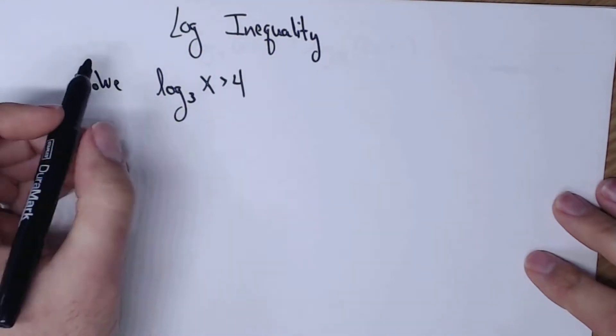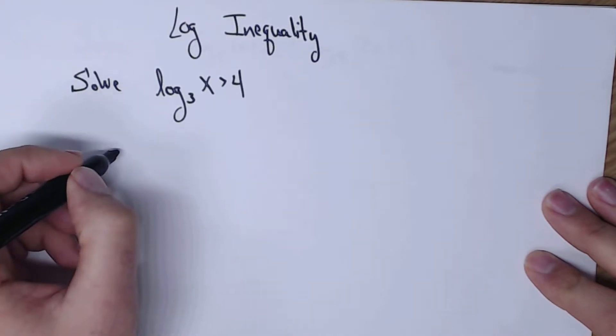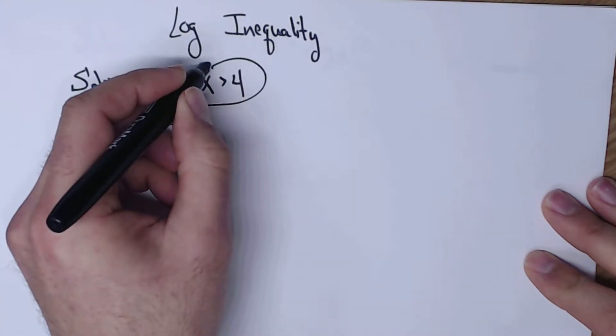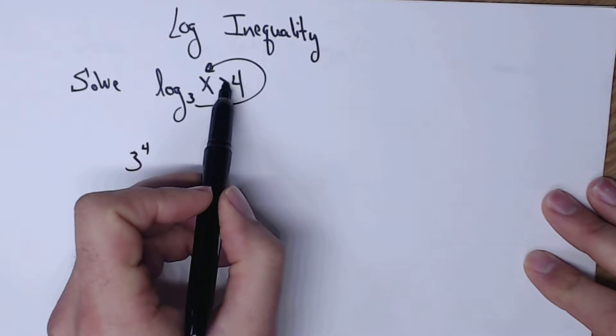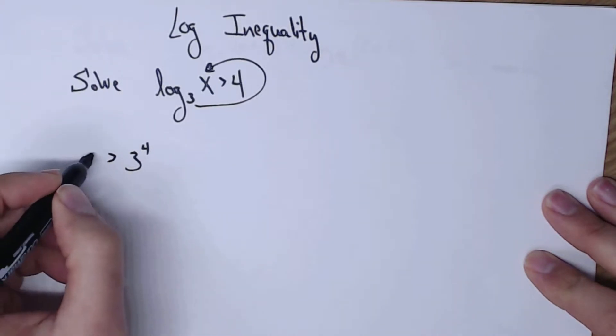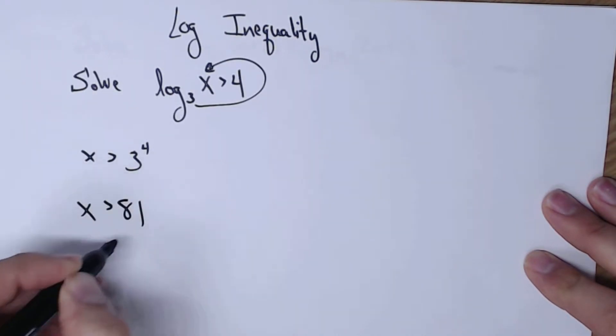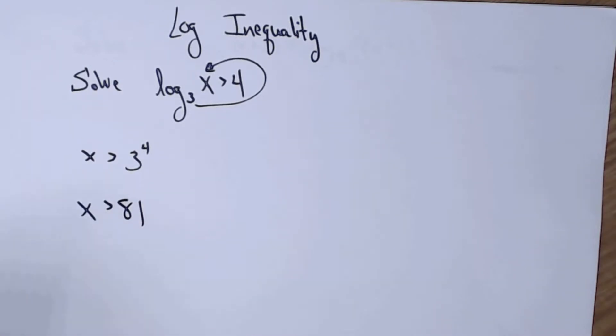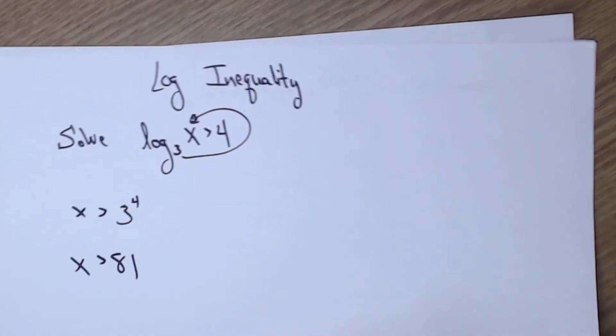Next we have this little fella. And again, I'm going to go from log form to exponential form. So log base 3 of x greater than 4. So 3 to the fourth is less than x. So x must be greater than 81 or 81 is less than x. Not too complicated in this one, but the next one gets a little bit tricky.